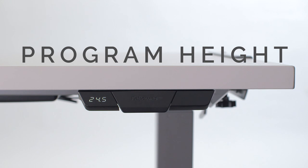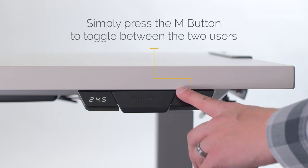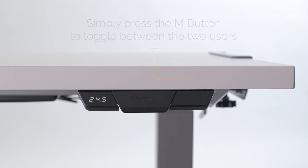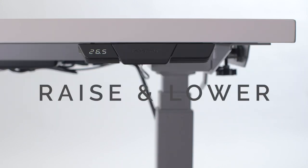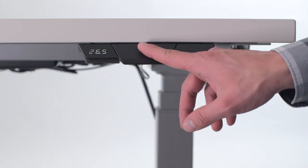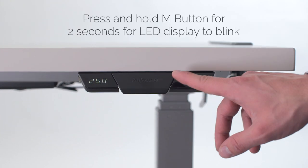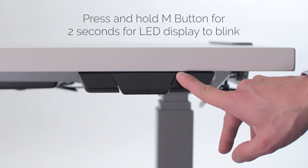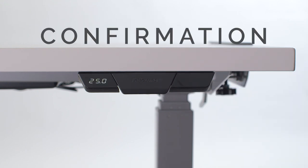To program height settings, simply press the M button to toggle between the two users which will display as U1 or U2. Raise or lower the table to the desired spot. Now press and hold the M button for two seconds and you'll see the LED display blink. This is confirmation that your setting has been stored and saved.